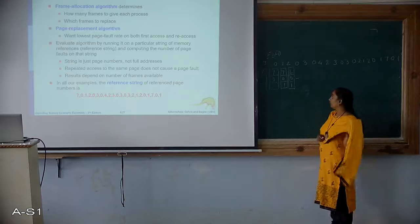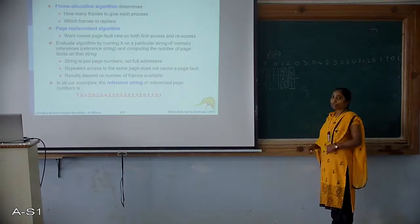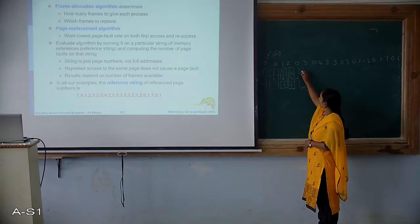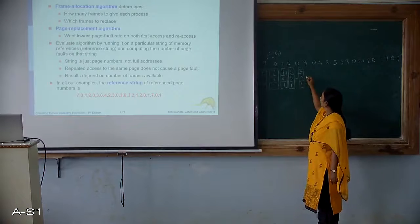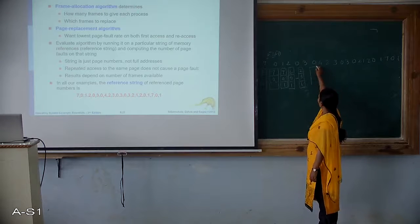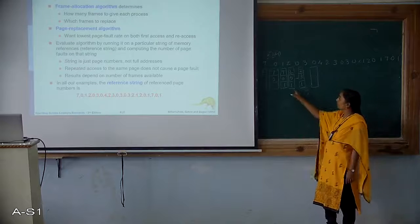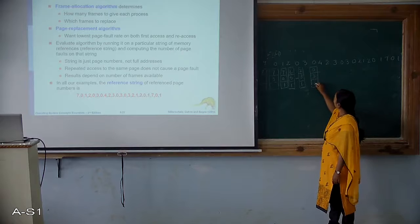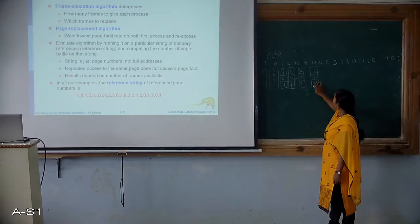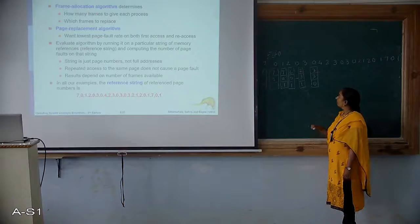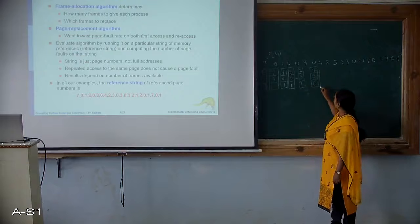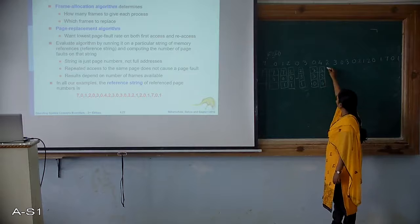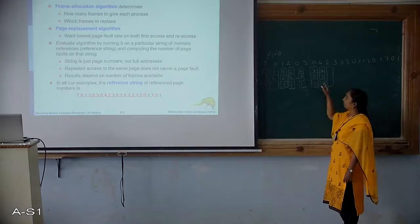0 is already present, so no need of page replacement. Then 3 is required. Now who came in first? 0. So replace 0 with 3. Next we want 0 again, so we bring 0 in. Now which is the oldest? The oldest of the remaining is 1, so remove that. Then we need 4, so 4 has to be brought in. Who is the oldest? 2 is the oldest, so replace 2 with 4. Again we need 2 — replace 3, because 3 is the oldest.